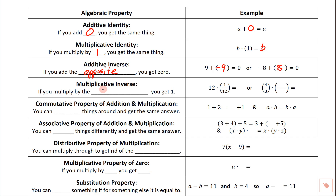The same type of thing is true with multiplicative inverses — they undo each other, but it's a little more complicated. If you multiply by the reciprocal, then you end up with one. For example, 12 times one-twelfth: 12 is really 12 over one, the reciprocal is one over twelve, and when you multiply, the twelves cross-cancel and you get one. If you started with a fraction like four-thirds, the reciprocal would be three-fourths — those cross-cancel and you end up with one. Additive inverses are opposites; multiplicative inverses are reciprocals.